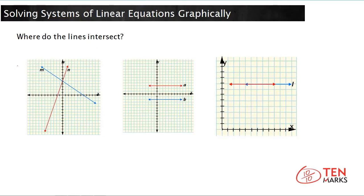Let's look at the first example. If you notice, these two lines — line m and line n — intersect at one point. So that means this system has one solution. One intersection means one solution.